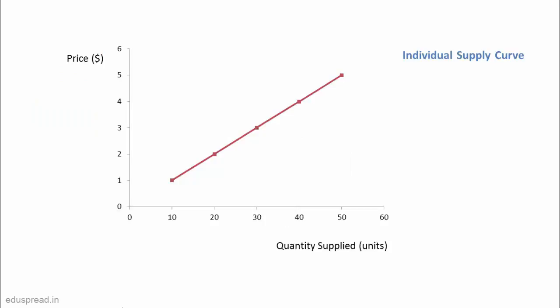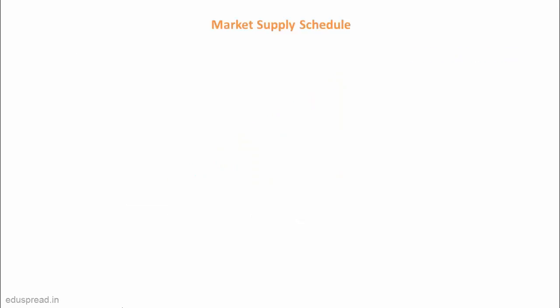Moving on to the supply curve — a supply curve is just a graphic representation of the supply schedule, and it carries the same information and assumptions that a supply schedule does. Here I have taken price on the vertical axis and quantity supplied on the horizontal axis. Note that this supply curve is an individual supply curve, as we are talking about only one firm here.